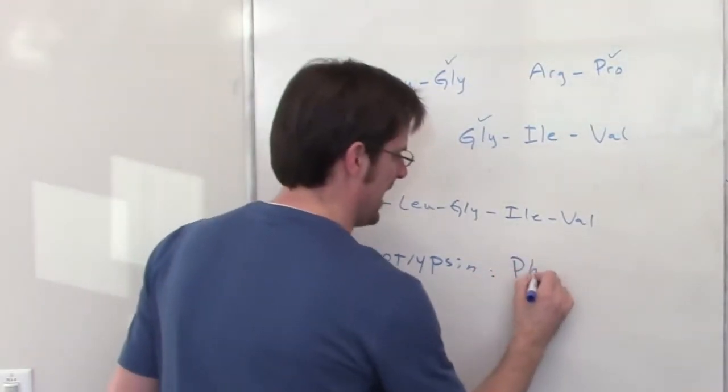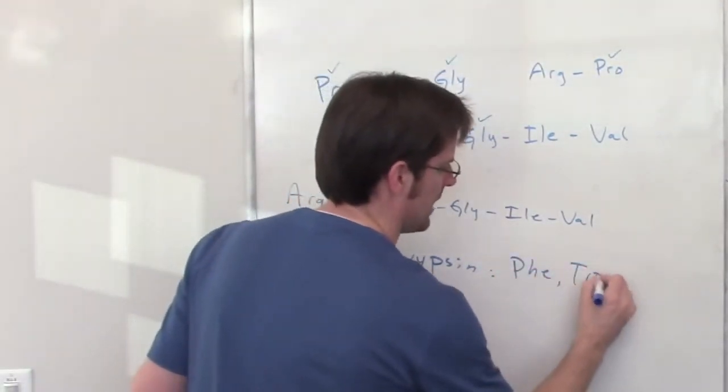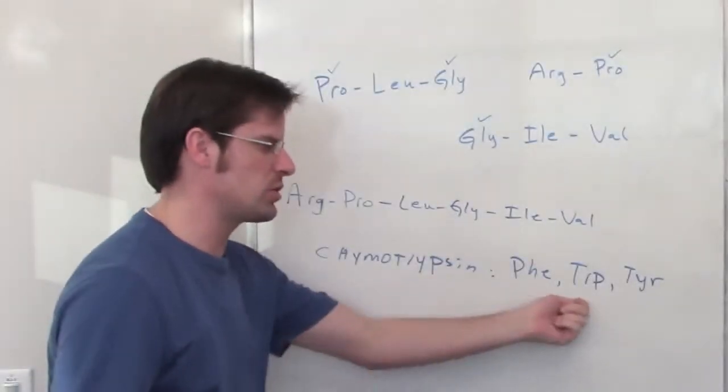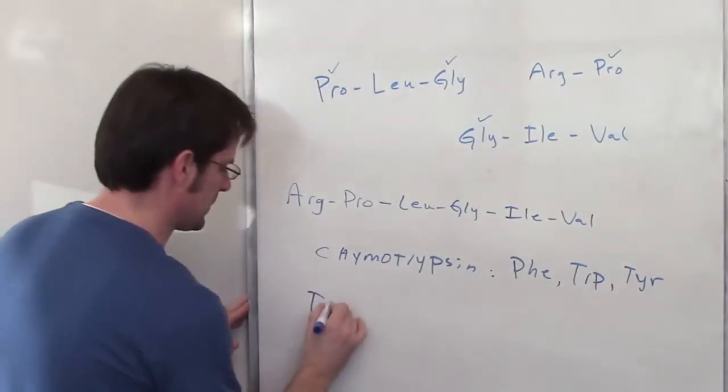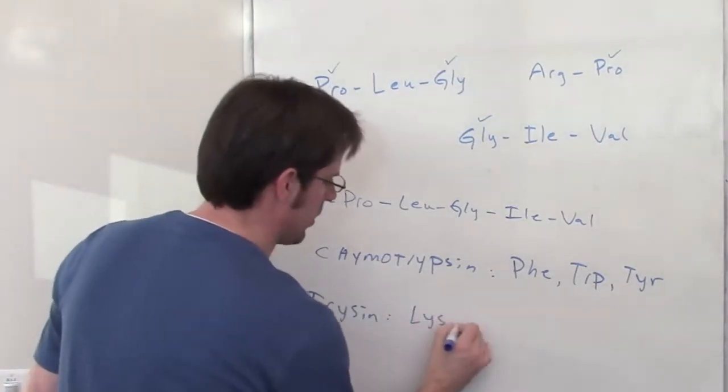Chymotrypsin cleaves at phenylalanine, tryptophan, and tyrosine. If you look at the structures of these, they are somewhat related. Trypsin cleaves at lysine and arginine.